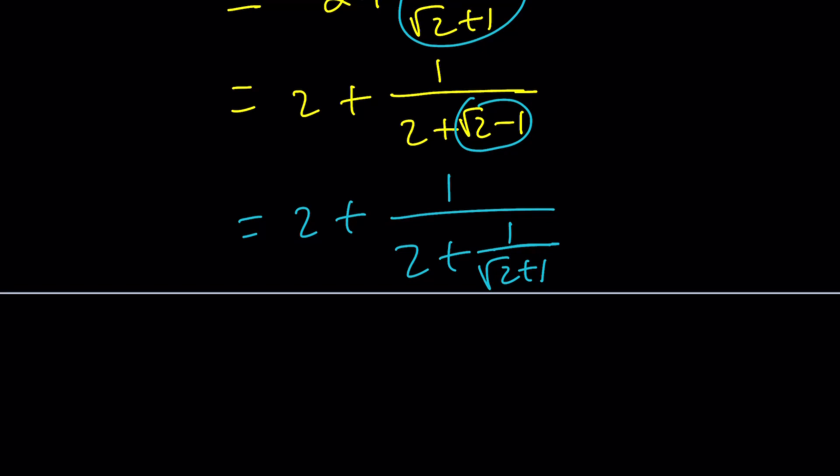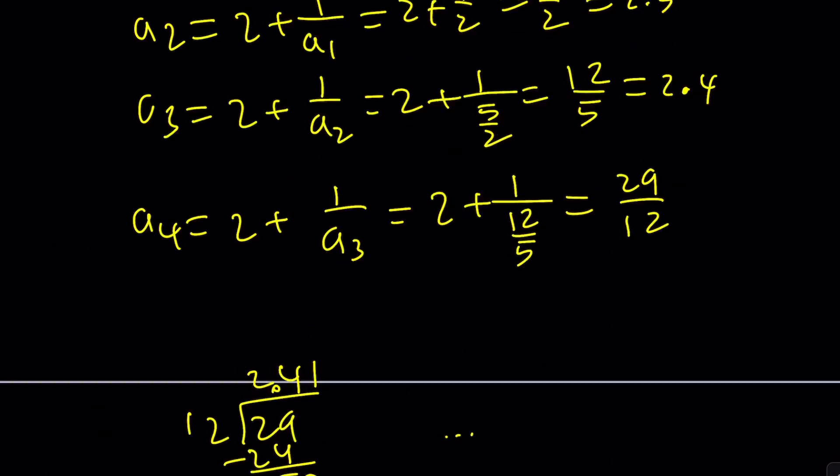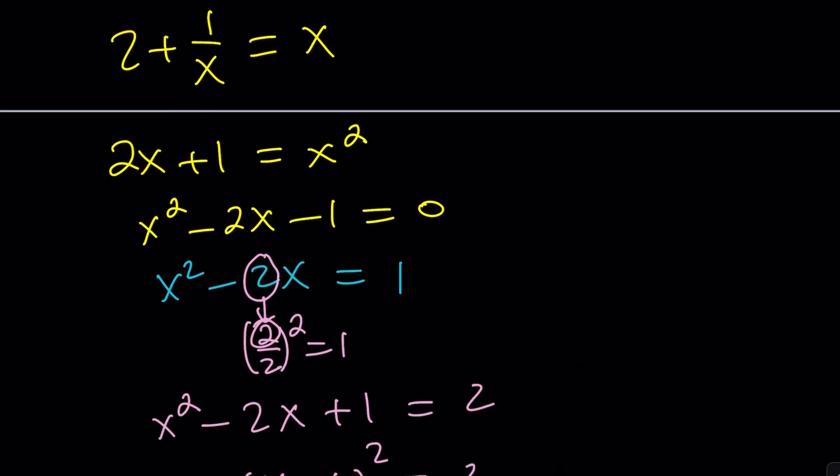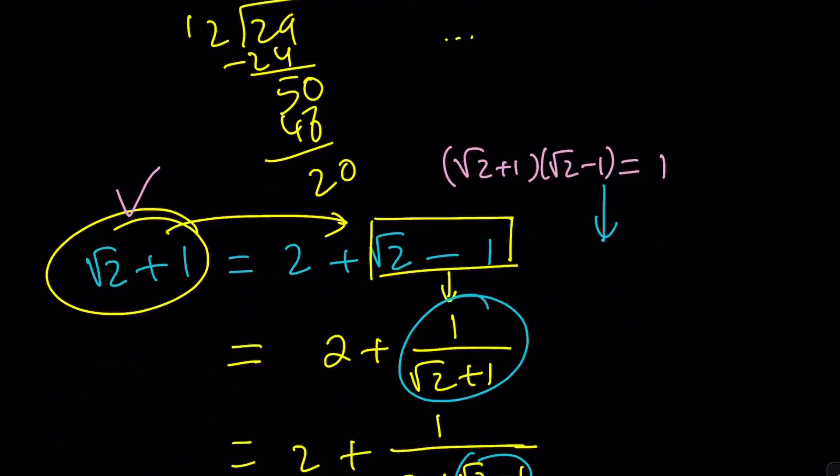And you're going to get our original infinite fraction. So we kind of work backwards. We started with the value. By manipulating the root 2 and the numbers, we arrive at the original expression. So that's going to be the value of our expression, which is root 2 plus 1.